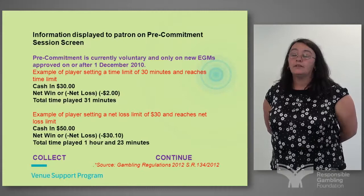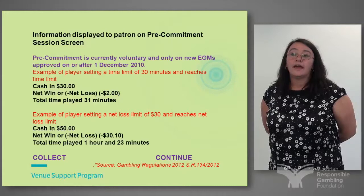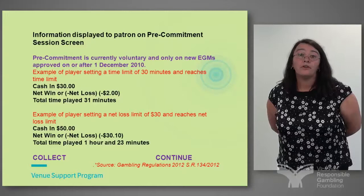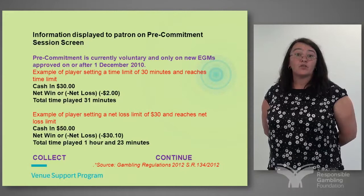The main difference between the voluntary pre-commitment screens and tracking session is that they can pre-set their limit rather than keep observing until they reach it. With the tracking session screens it's up to the individual to go back periodically and check; if they've pre-set a time or money limit then there's a pop-up screen that will come up.